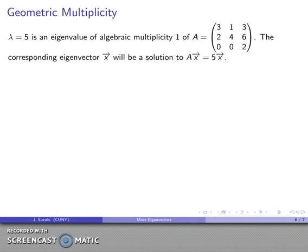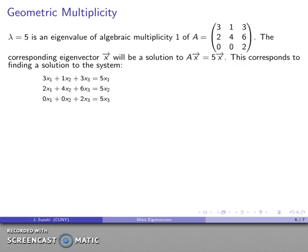What about lambda equals 5? Well, we found out that this was an eigenvalue of algebraic multiplicity 1, and so my corresponding eigenvector is going to be a solution to Ax equals 5 times my vector x. And this corresponds to finding a solution to the system.